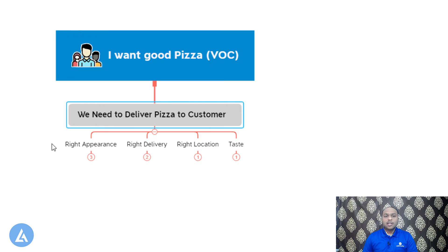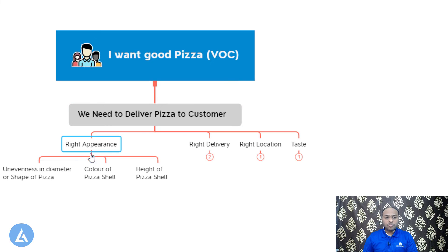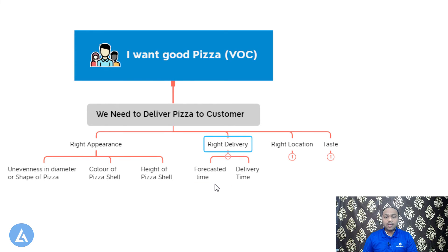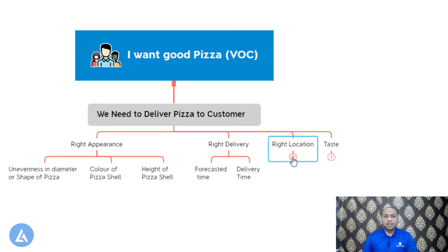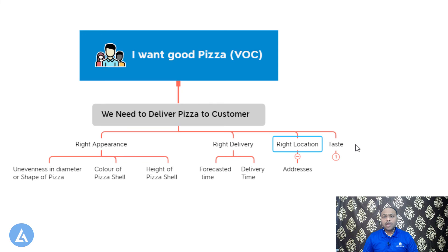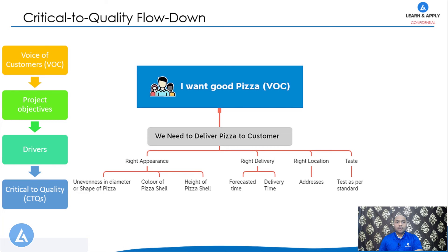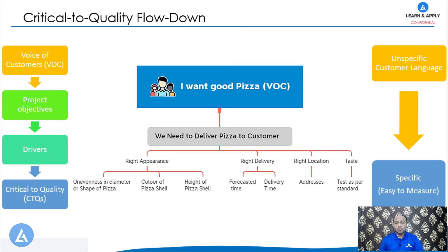Now if we specify these drivers, these are called as CTQs. For example, right appearance can be flowed down to unevenness in diameter or shape of the pizza, color of the pizza shell, and height of the pizza shell. Right delivery consists of forecasted time versus actual delivery time. Right location CTQ will be the correct address. The last driver, taste, flows down to taste as per the standard. In this way we translate voice of customer — unspecific customer language — into specific, easy-to-measure language: the critical to quality parameters.